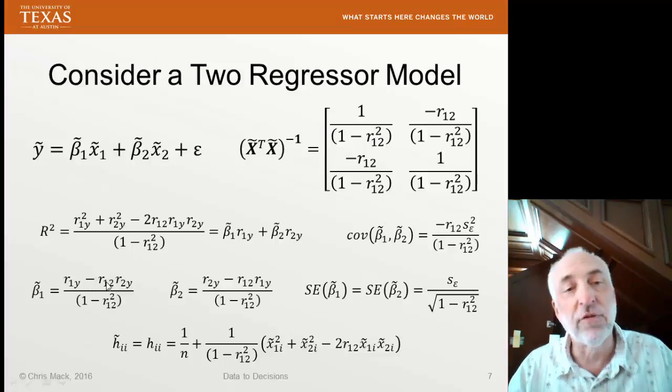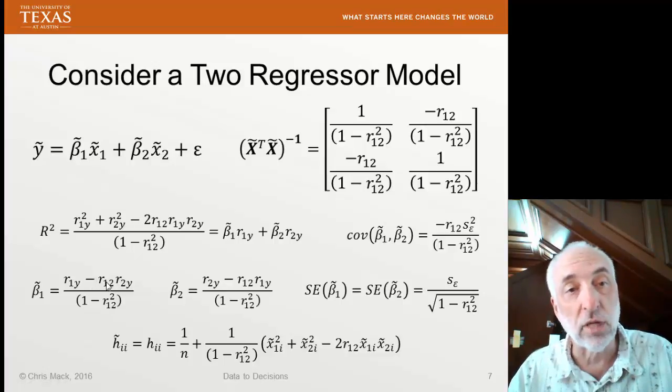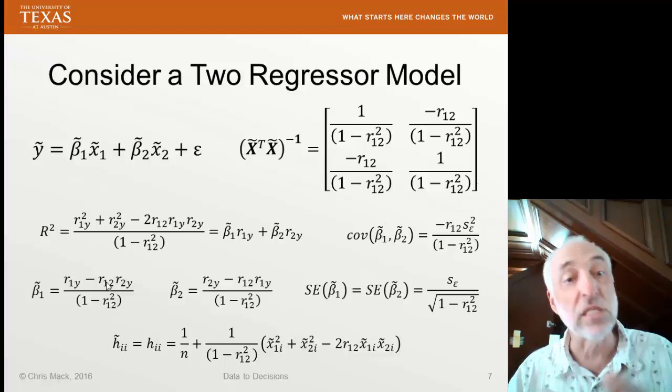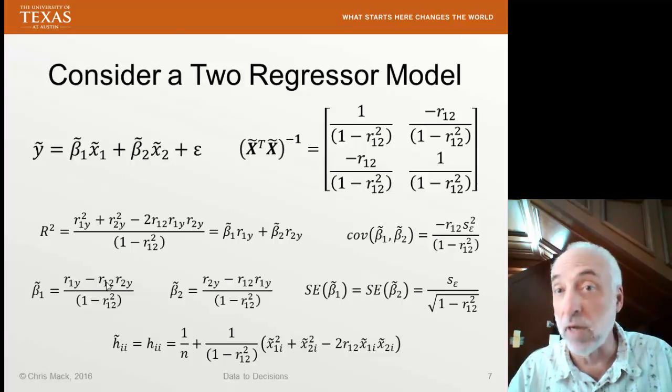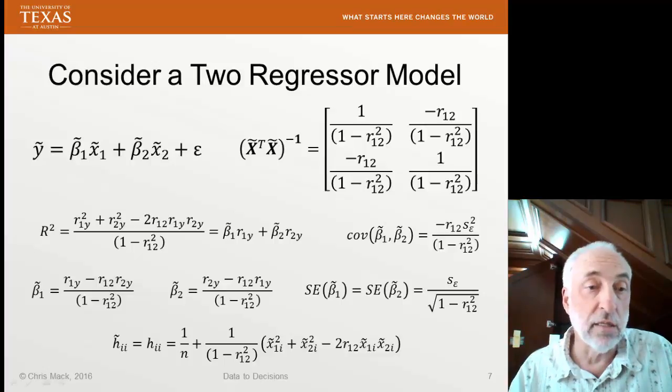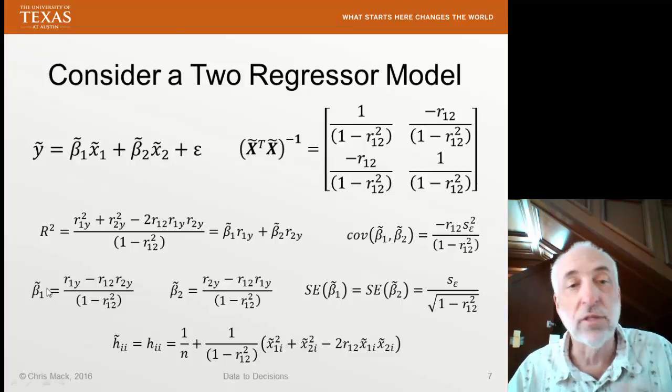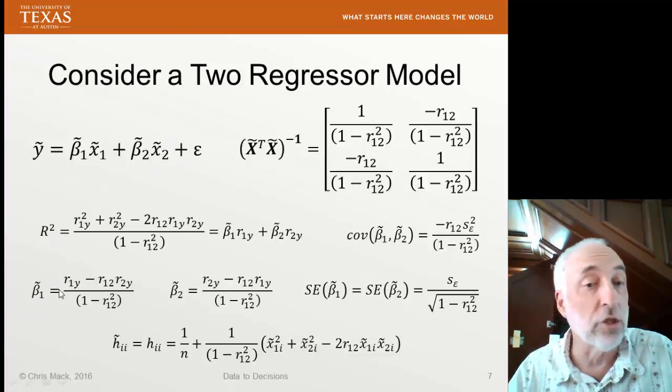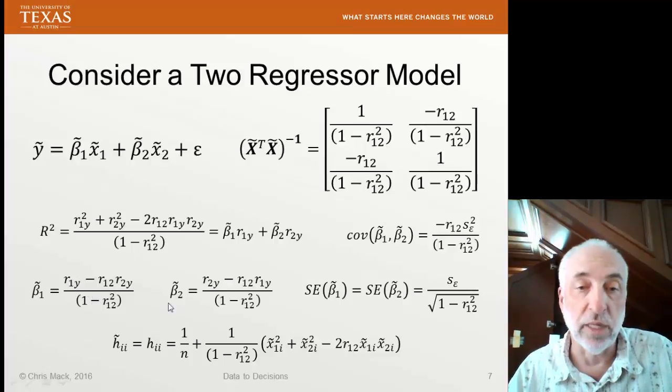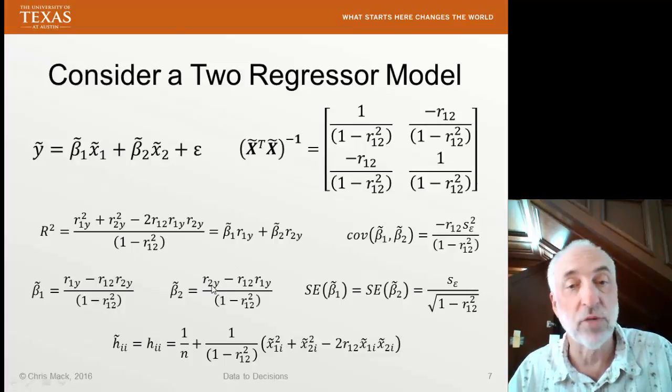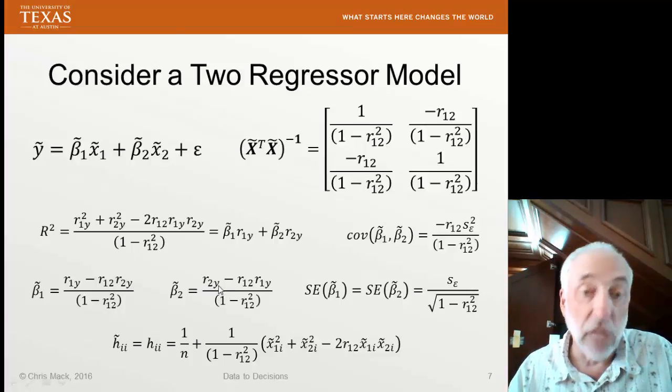If the cross-correlation between variables 1 and 2 is 0, that is, I have an orthogonal set of two parameters, then in this normalized, standardized space, the model coefficient beta 1 is simply the correlation coefficient between variable 1 and y. Likewise, beta 2 is simply r2y, the correlation between the second predicted variable and our response.